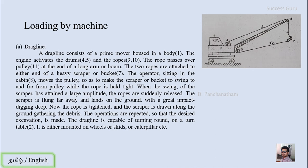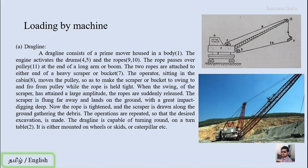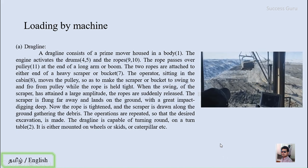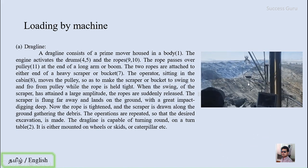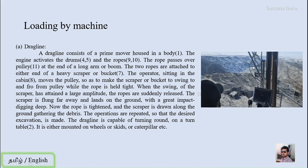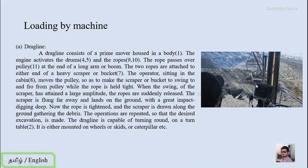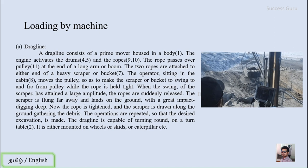The rope is tightened from drums 4 and 5, so the scrapper moves towards the machine and by moving it also collects the debris broken on the ground surface. The operations are repeated so that the desired excavation is made. The drag line is capable of turning around on a turntable, which is number 2, almost 360 degrees, and it is either mounted on wheel skids or caterpillars according to necessity. This is how it works, and in the actual machine view you can see the operator's viewpoint — the scrapper moves forward and collects debris as it moves toward the machine.